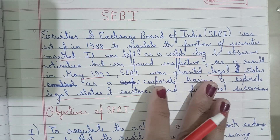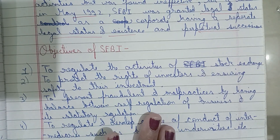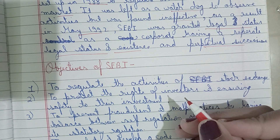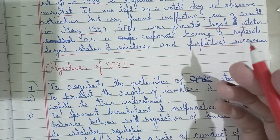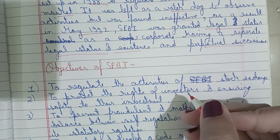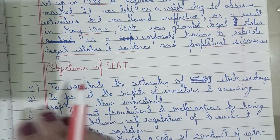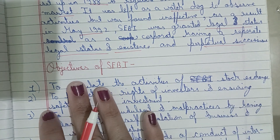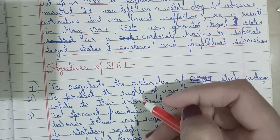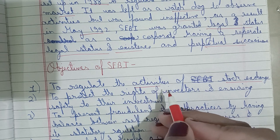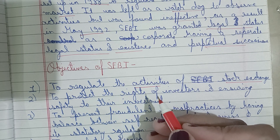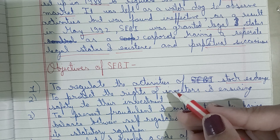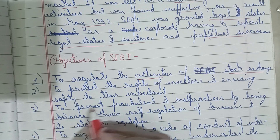So SEBI has the same power whether owners come or go, and its functions keep working no matter what. This has been the meaning of SEBI. Now let's look at the objectives. The main objective of SEBI is to regulate the activities of the stock exchange with proper rules and regulations, so that the stock exchange operates in a regulated way.